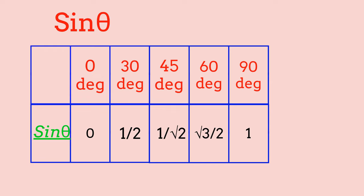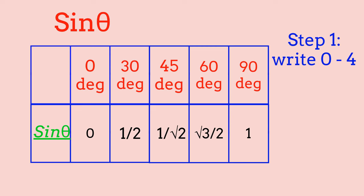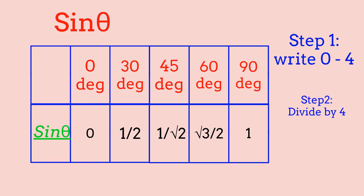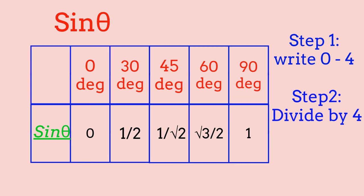Now let's go over some simple tricks to create the trigonometry table of sin theta. We make a table and for each of the values 0, 30, 45, 60, and 90 degrees, we write 0 to 4. So for 0 it's 0, for 30 it's 1, for 45 it's 2, and so on up to 90 which is 4. Then we write divide by 4 underneath each box.